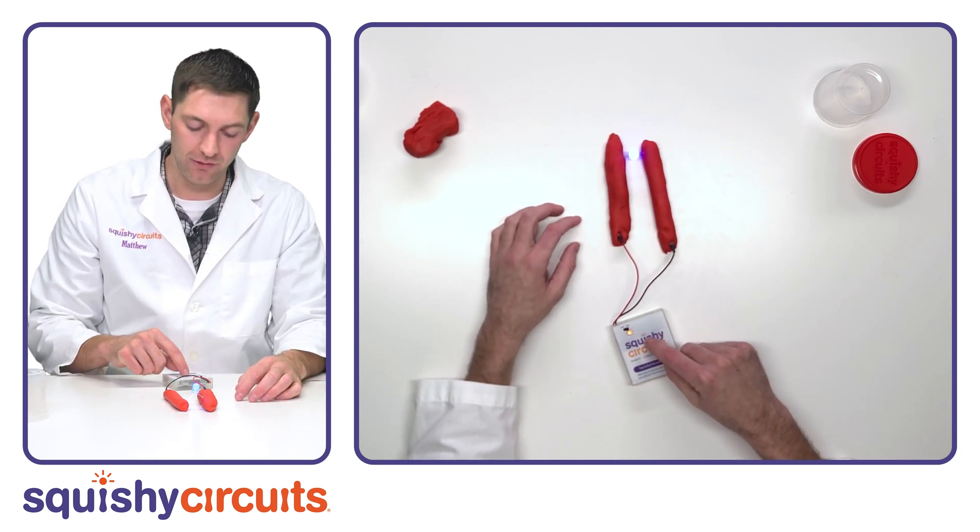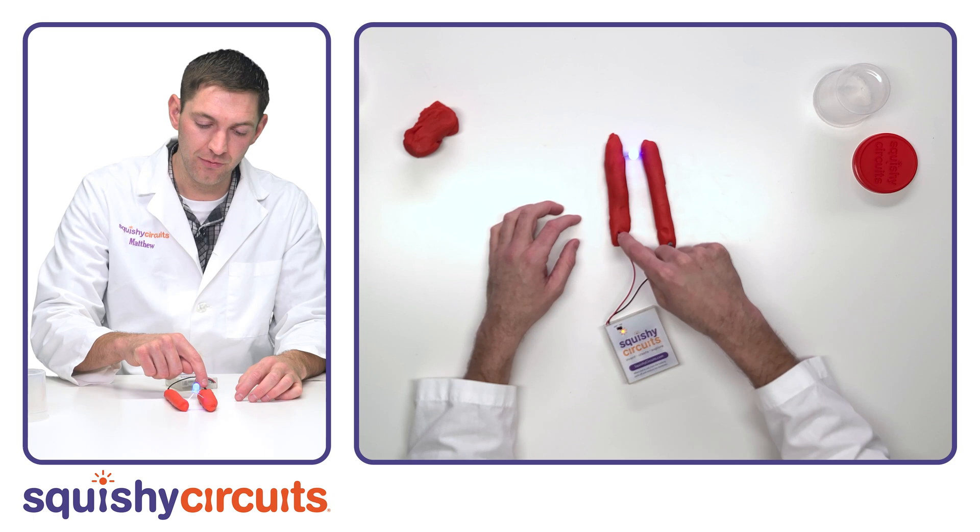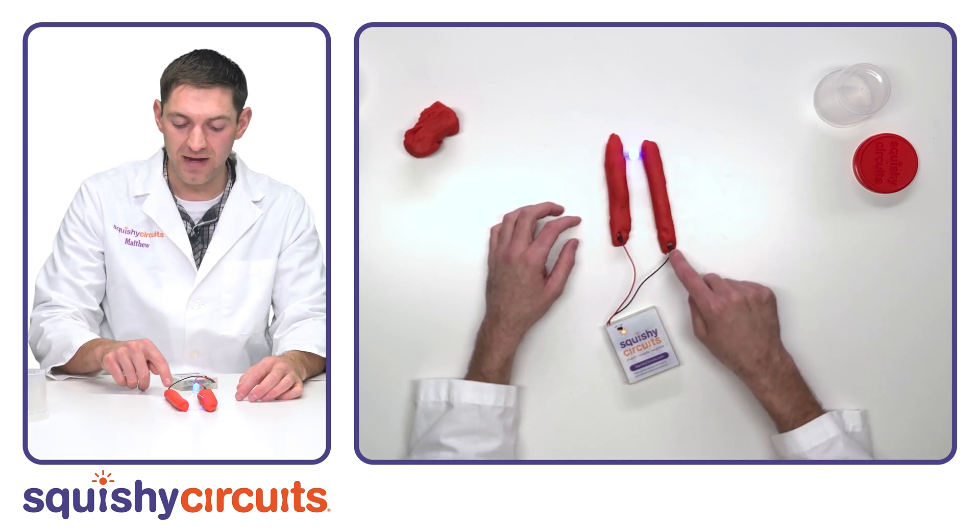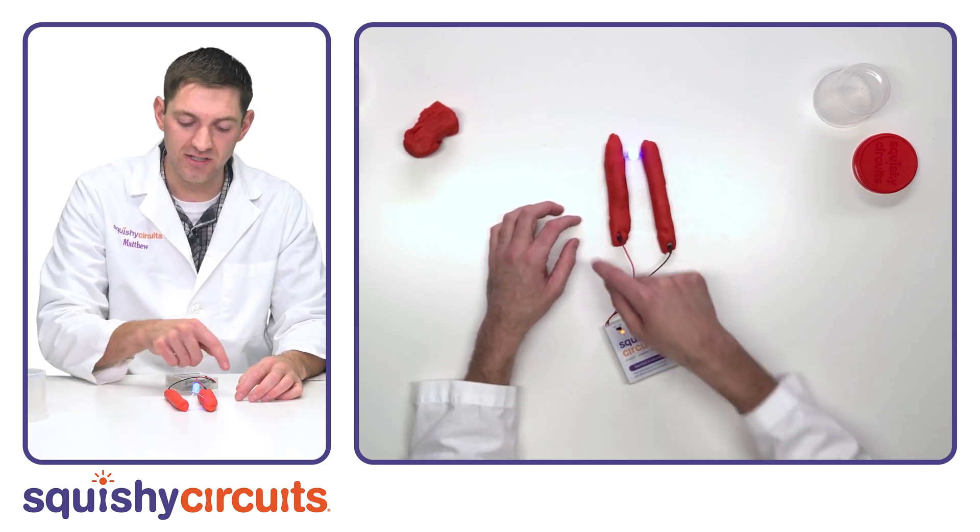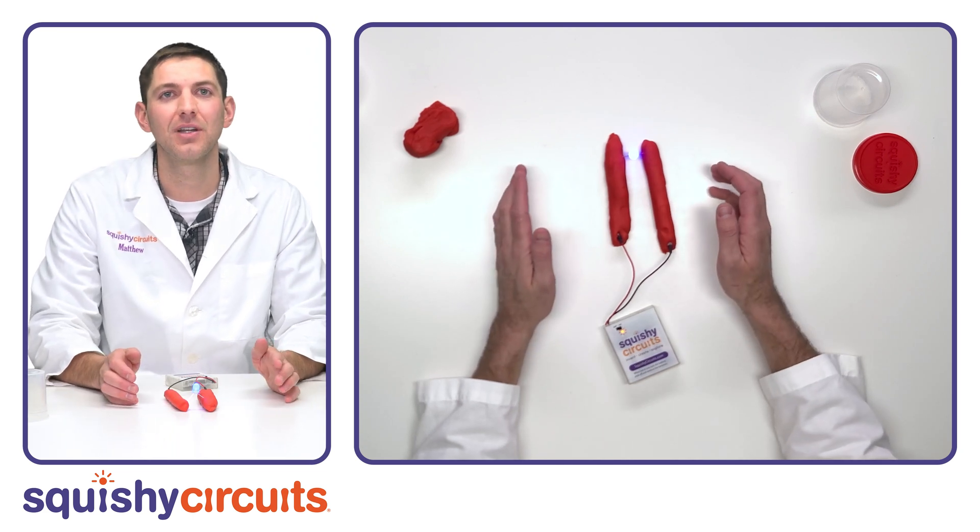Electricity is flowing from the battery holder, through the wire, through the conductive dough, through the LED, and then back to the battery holder in a circle. We call this a completed circuit.